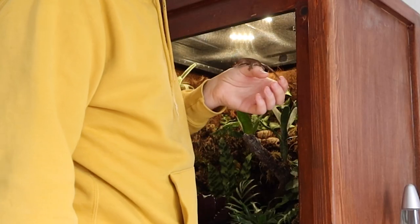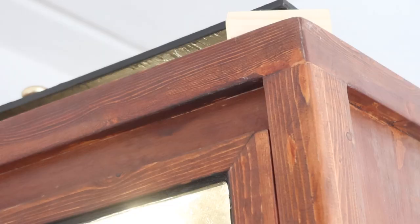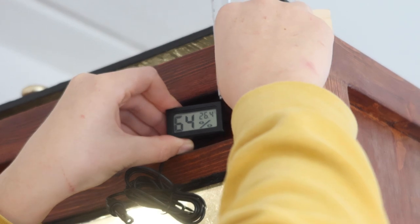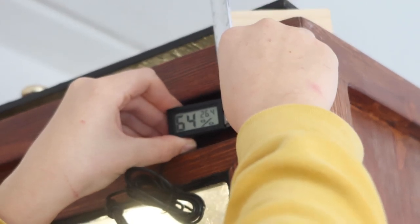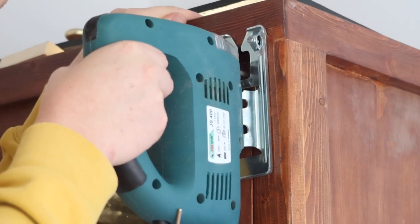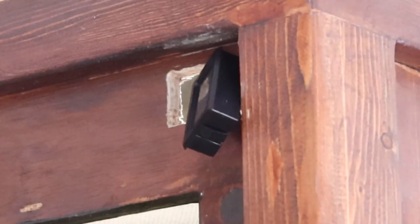Over in the reptile room, I temporarily removed Tito from his enclosure since I want to install a hydrometer. This little device will measure the humidity and temperature inside of his enclosure, giving me more insight about how his enclosure is doing. To install this, I first drilled a few holes and cut out a tiny rectangle. The screen was pushed into this hole.